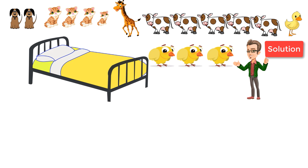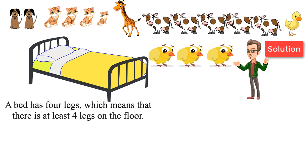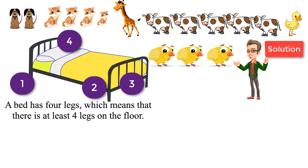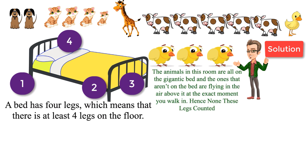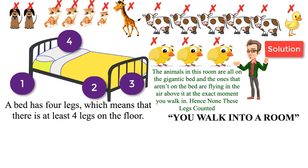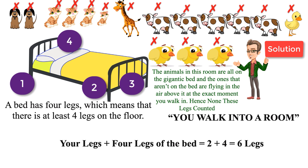First, a bed also has four legs, so that already means there are at least four legs on the floor. Almost all of the animals are on the gigantic bed, and the ones that aren't are flying in the air above it. The other two legs come from you — because you walk into a room. As you entered the room you would have both your feet on the floor. So only your two legs and the four legs of the bed are touching the floor, giving a total of six legs.